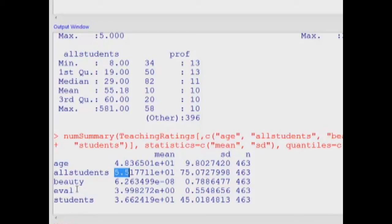The evaluation score, which was on average 3.99. This is for the course, not for the instructor, and the standard deviation is 0.55, very comparable to the statistics listed in the paper, and the number of observations, 463.